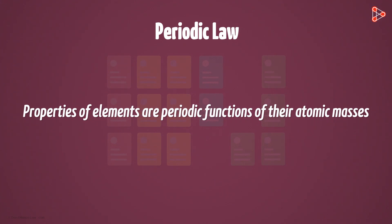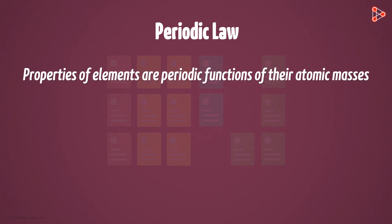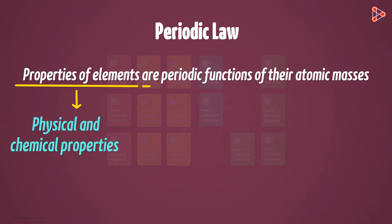Now what do we exactly mean by this? Let's simplify this by breaking the statement in parts. Properties of elements means the physical and the chemical properties of all the elements in the table. Are periodic functions means those which occur at regular intervals.